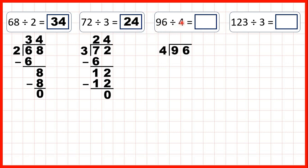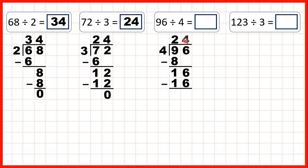Now 96 divided by 4. We need a number in the 4 times table that's as close to 9 as possible, but not more than 9. 8 is in the 4 times table and that's less than 9, so we can write 8 below. And because 8 divided by 4 is 2, or 2 times 4 is 8, we have 2 as the tens digit of our answer. Now we subtract and bring down: 9 minus 8 is 1, and we bring down the 6, so we have 16 divided by 4. Well 16 is in the 4 times table, and that's 4 times 4, so 4 is the ones digit of our answer.